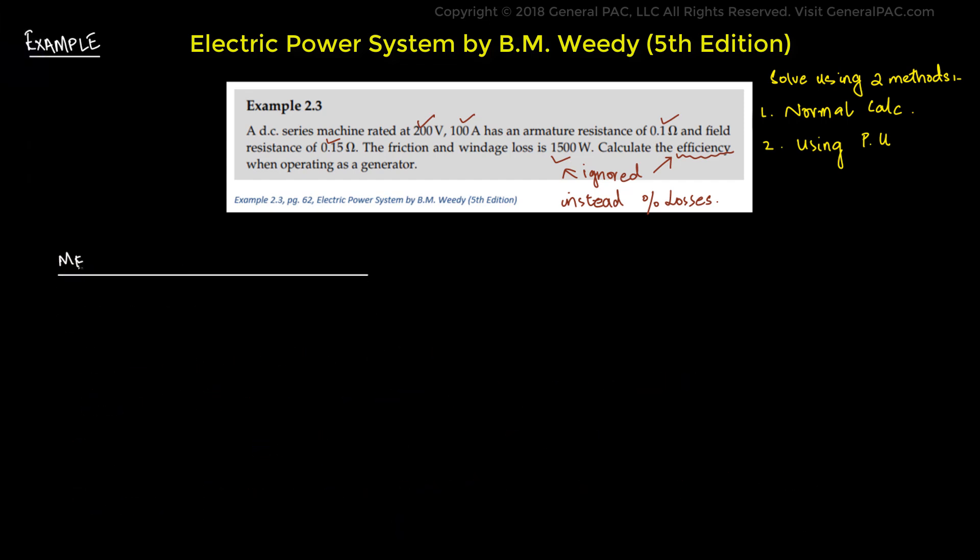Let's solve the same example by way of per units. In method two, we will use the per units method. To convert the system into per units, we require base values and actual values. In the case of this machine, we will take the ratings as the base value and get the base voltage and base current. We will now find the per unit impedance for the machine.